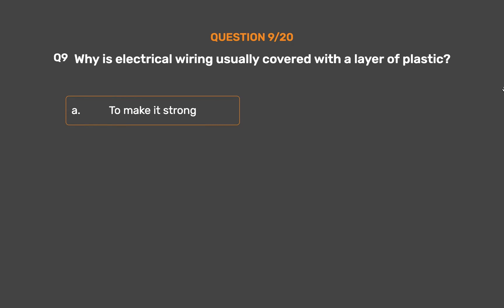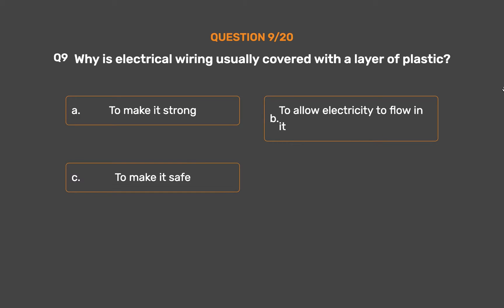Question number 9. Why is electrical wiring usually covered with a layer of plastic? Option A: To make it strong. Option B: To allow electricity to flow in it. Option C: To make it safe. Option D: To make it beautiful.